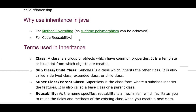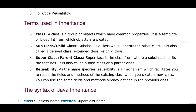There are some terms used in inheritance. First is 'class'. A class is a group of objects which have common properties. It is a template or blueprint from which objects are created. We can classify objects that have the same variables, methods, and behavior into a class.